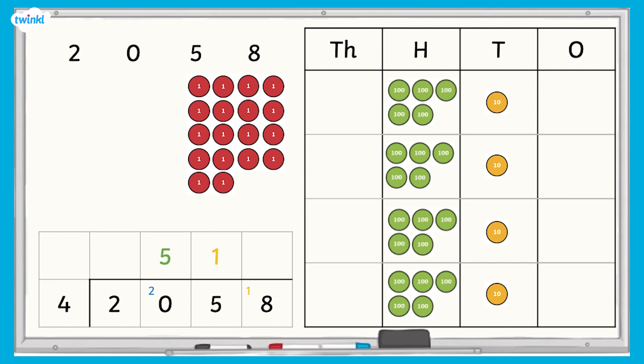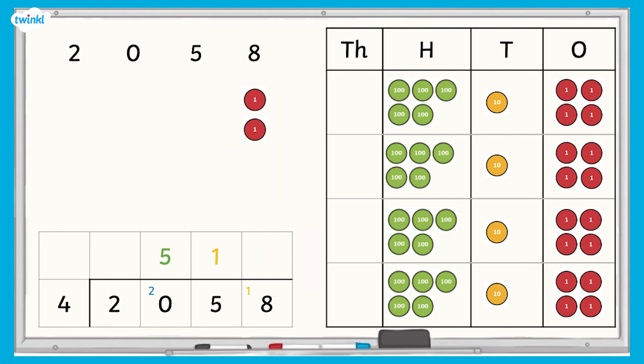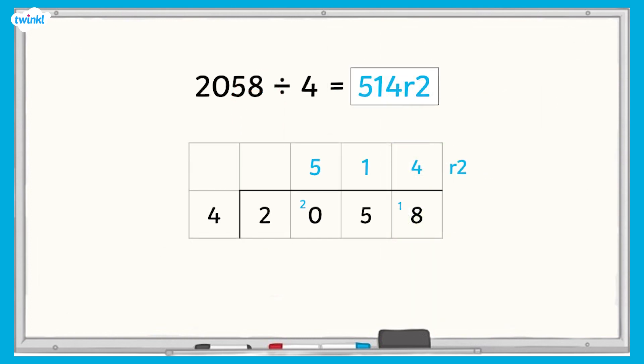Finally, we divide the ones. Eighteen ones divided by four equals four ones with two left over. We write a four in the ones column above the line. As we can't divide the final two ones equally into four groups, this is our remainder. We write this using a lowercase r, like this. Two thousand and fifty eight divided by four equals five hundred and fourteen remainder two.